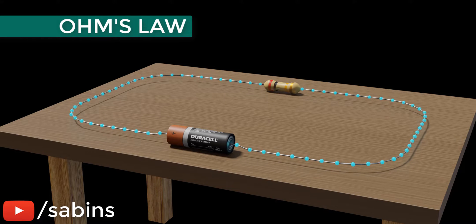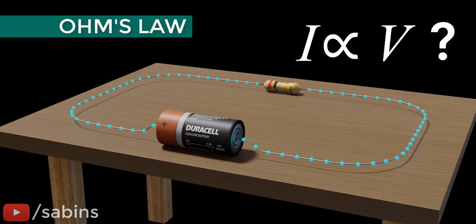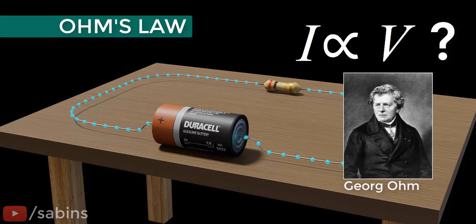Ohm's law is one of the most popular laws of physics, but do you know why current flow through a conductor is directly proportional to the voltage across it? Let's see how George Ohm's brilliant mind worked while he derived this famous law.